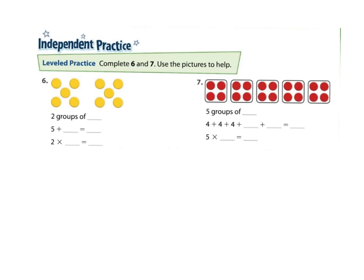Notice in number 6, we have 2 equal groups of 5 counters — so we have 5, 1, 2 times, or 5 plus 5. How many counters total do we have? 10. Again, we have 2 groups of 5 equaling 10 counters.